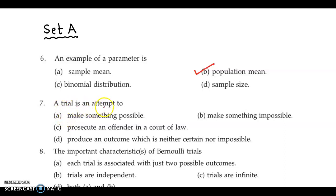Next, a trial is an attempt to make something possible, make something impossible, prosecute an offender in a court of law. Now this is not related to statistics. And option D is produce an outcome which is neither certain nor impossible. So the correct answer is option D. A trial is an attempt which produces an outcome which is neither certain nor impossible.